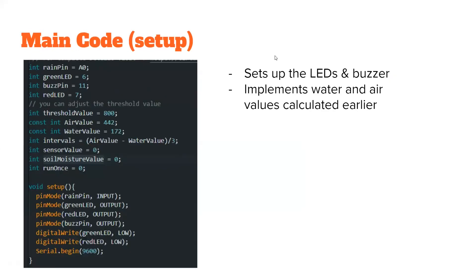This is the main code, which essentially is the part that does the actual work. However, this screenshot just depicts the setup part. It sets up the LEDs and buzzer, implements the air and water values we calculated earlier. We also have a new value called intervals, which subtracts the water value from the air value and divides that by three.